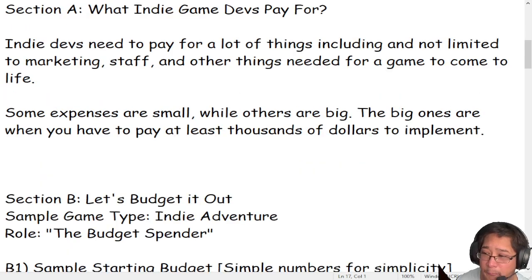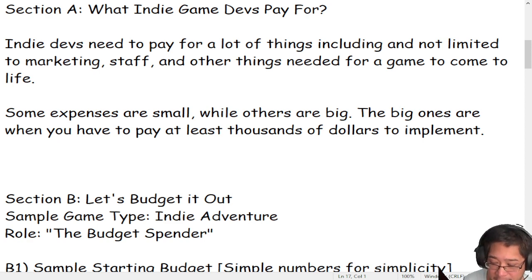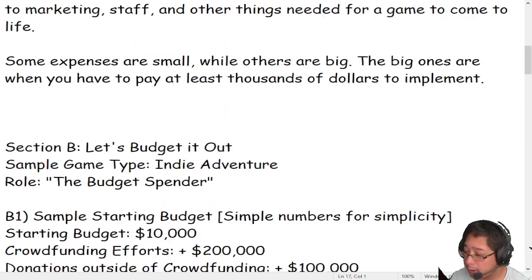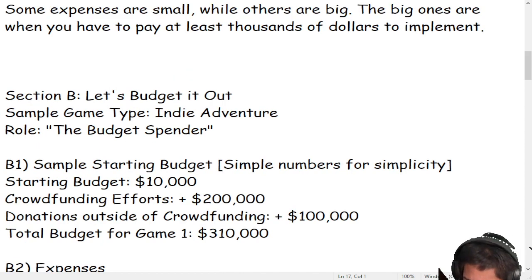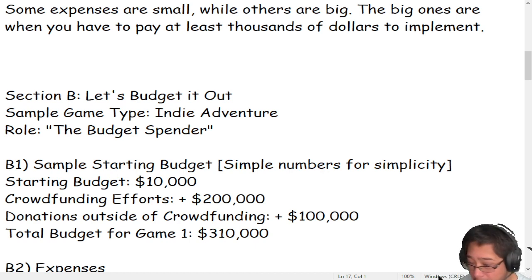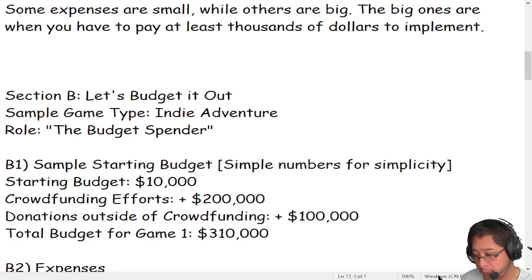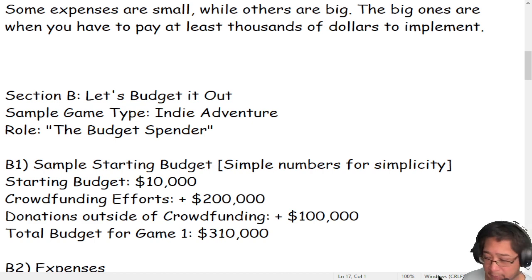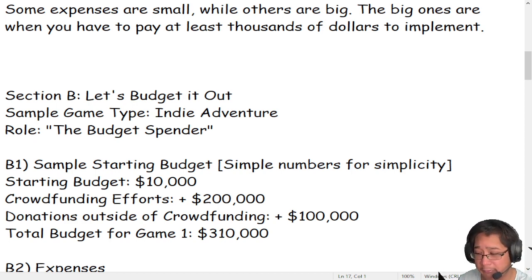Let's do our sample budget. Today, we're going to assume that we're making an indie adventure game and our role is to be the budget spender. For simplicity, we're using sample small numbers in a way that makes sense. Our starting budget for this adventure game is $10,000. However, we decided to make a Kickstarter, and 500 days later our Kickstarter was successful and we made over $200,000, plus or minus fees. In addition to that, we grabbed donations from outside our crowdfunding campaign and made over $100,000, for a total game budget of $310,000. This number — $310,000 — is going to be important in a moment.